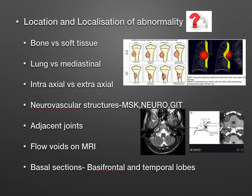Look at adjacent joints in musculoskeletal cases, and always look at flow voids on MRI. Here you can see a normal left segment showing a normal blackish appearance — a normal flow void. On the right side, the flow void is lost, indicating occlusion of the right ICA. This clues the cause of infarction and tells the clinician where to look and what can be done further. Flow voids are very important — not only in brain but also in abdomen, peripheral joints, and limbs.